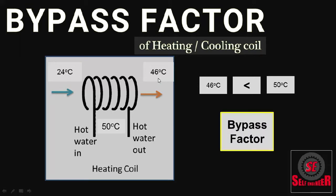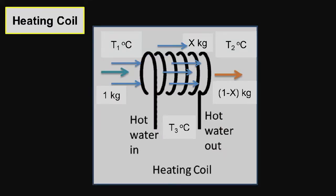Let us discuss how it works. Consider 1 kg of air is entering over the heating coil as shown in the figure. The temperature of air entering is T1 degrees Celsius, whereas the temperature of the heating coil is T3 degrees Celsius. The air flows over the coil and leaves the coil at a temperature of T2 degrees Celsius. When air passes over the coil, some part of air does not come in contact with the coil — it just bypasses the coil.